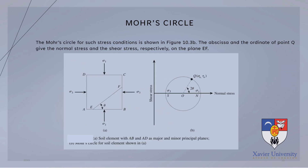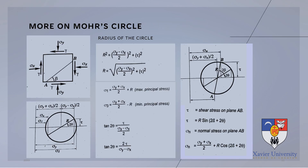The Mohr's Circle for this stress condition is shown in the figure. The abscissa and ordinate of point Q give the normal stress and the shear stress respectively on plane EF.